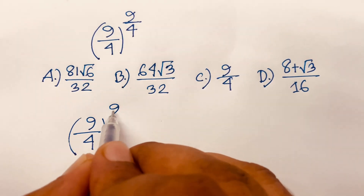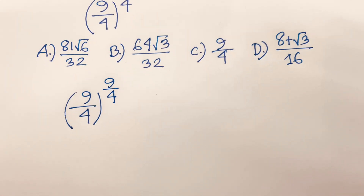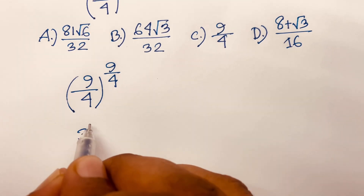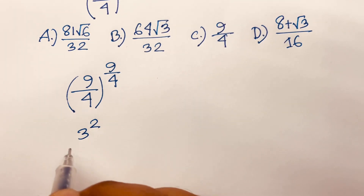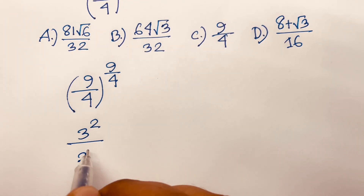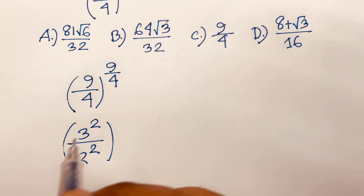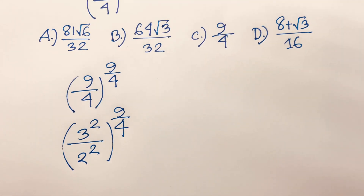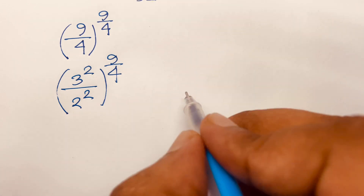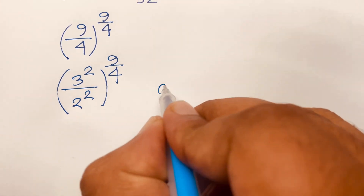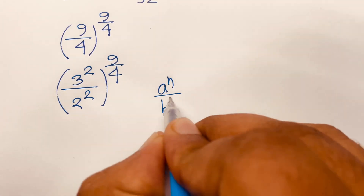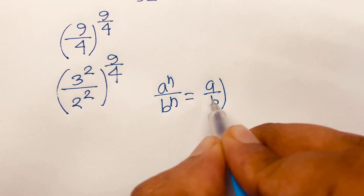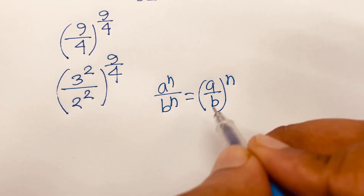I can write 9 as 3², and 4 as 2², so the expression becomes (3² / 2²) to the power (9/4). Using the exponential rule that (a/b)ⁿ = aⁿ/bⁿ, since the exponent is the same, we can rewrite this.